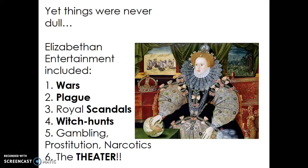A lot of our children's stories and songs have really sinister backgrounds. There were also royal scandals, not unlike today — people liked to follow what the monarchy was doing. They had witch hunts, and unfortunately a lot of innocent people were probably put to death because they were accused of being witches. One of the most notable trials: they would throw people into the river — if they could swim, they were a witch and had to be killed; if they sank, they were considered good Christian souls. Either way, you died. Gambling, prostitution, and narcotics were also forms of entertainment, and of course, the theater.